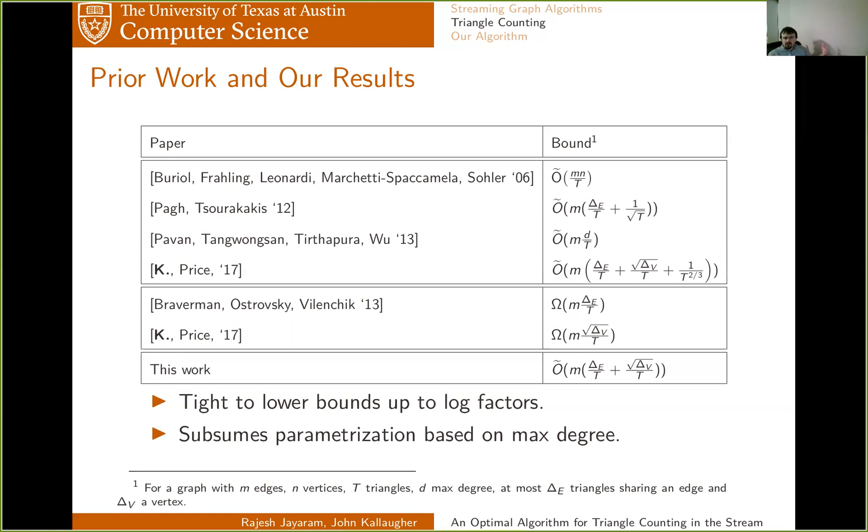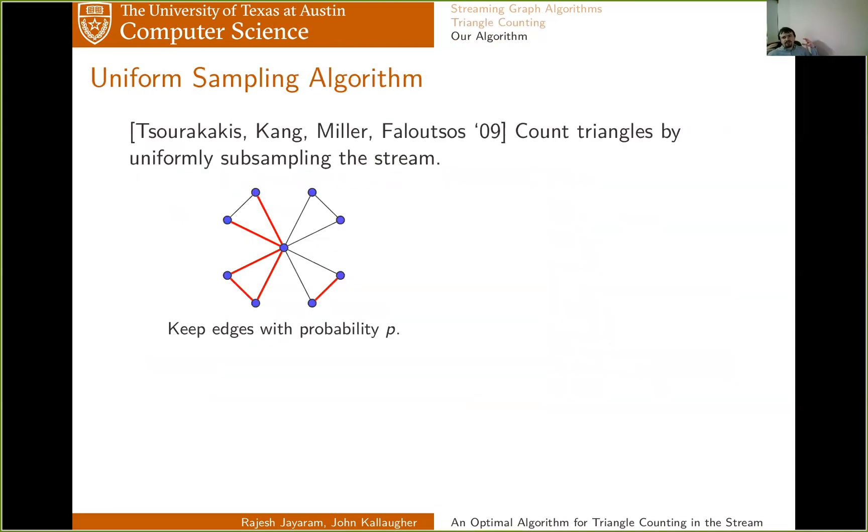So for the remainder of the talk, I want to talk about the algorithm, and how it works, and why it works. To start with, I want to bring that to an algorithm of Tsourakakis, Kang-Müller, and Faloutsos, which counts triangles by uniformly subsampling the stream, or other source of edges. This was not exclusively an algorithm for streaming triangle counting. So in this algorithm, you keep edges with probability P, you count how many triangles you see, and then you multiply it by P to the minus three, because your chance of keeping any given triangle was P cubed.